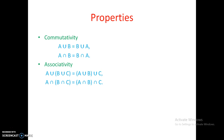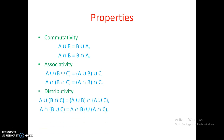Next is distributivity. A union (B intersection C) is equal to (A union B) intersection (A union C). This is the distributive property — B and C are distributed with A separately using the same symbol. If the symbol between B and C is intersection, then it becomes (A union B) intersection (A union C). This property also holds good when intersection and union are interchanged.